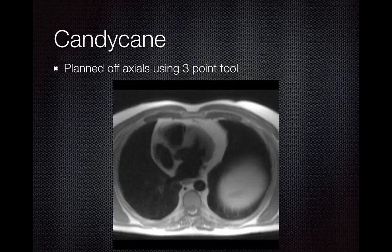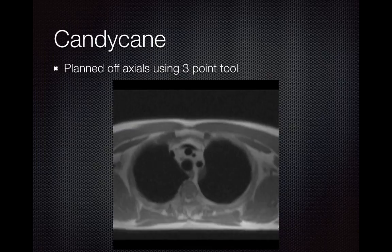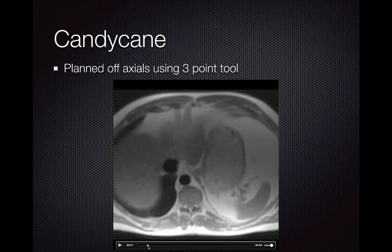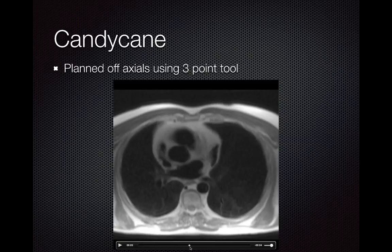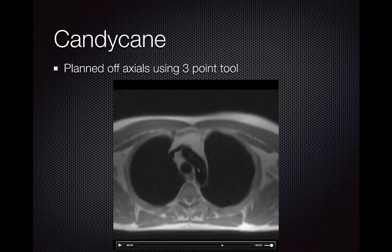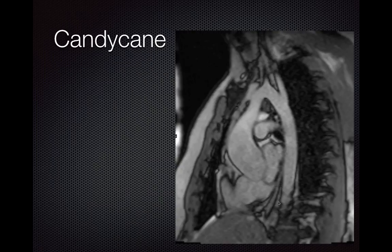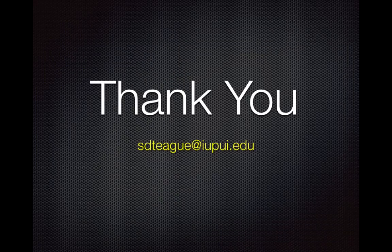To set up the candy cane view — seeing the whole aorta in one view — we use the three-point tool available on the scanner. We place a dot in the ascending aorta, a dot in the descending aorta, and a dot in the center of the aortic arch. This produces a very nice candy cane view of the aorta. Thank you for your time and attention; please feel free to contact me with any questions.